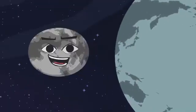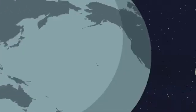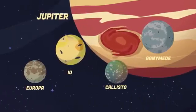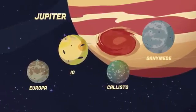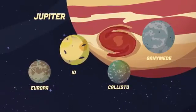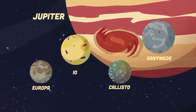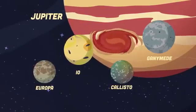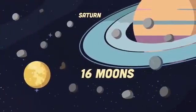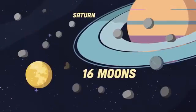All major moons of the planet Jupiter are tidally locked: Europa, Io, Callisto, and Ganymede. Saturn's moons are also tidally locked to it. There are 16 of them in this position.